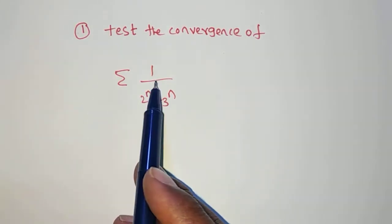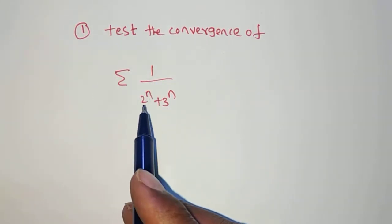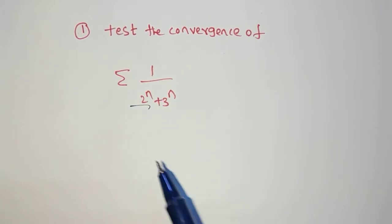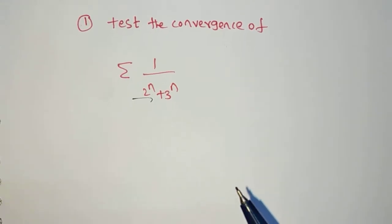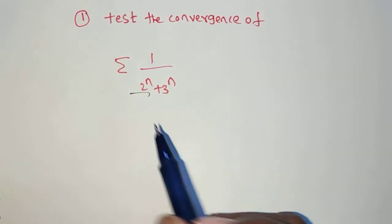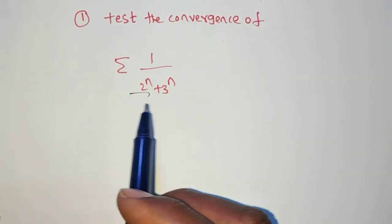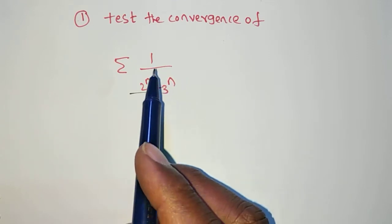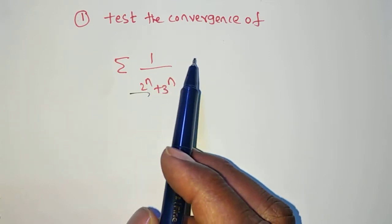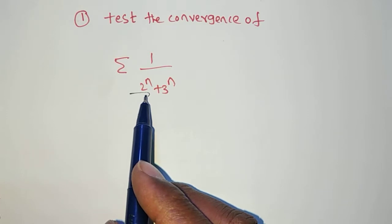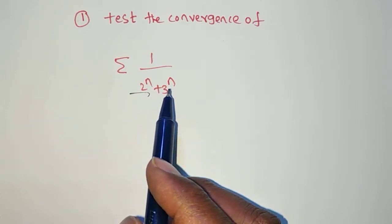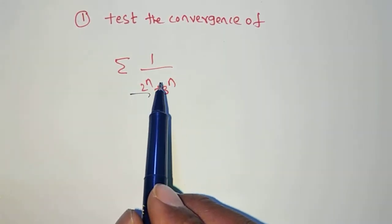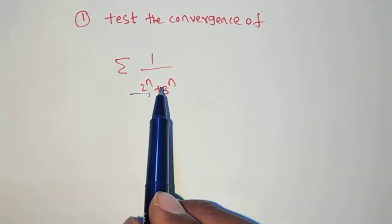We are solving the problem: test the convergence of summation 1 by 2 power n plus 3 power n. To solve this problem, we first check if this is a series of positive terms. The numerator is 1, which is positive. The denominator is 2 to the power of n plus 3 to the power of n, which is also positive. So the entire term is positive — this is a series of positive terms.